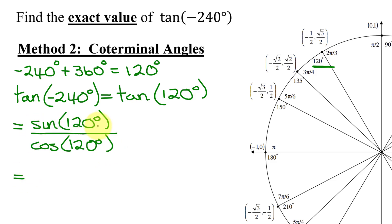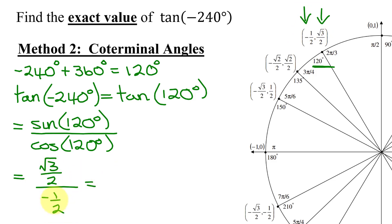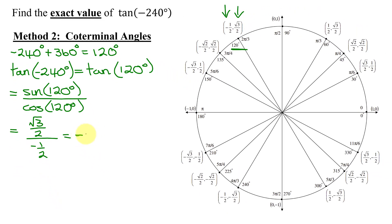The sine of 120 degrees is the y-coordinate of this point, so it's the square root of 3 divided by 2, divided by the cosine of 120 degrees, which is the x-coordinate of this point — negative one half. A positive divided by a negative is a negative. Take the fraction in the numerator, leave it alone: square root of 3 over 2, multiply by the reciprocal 2 over 1. The 2's reduce, giving negative the square root of 3 times 1 over 1, which is just negative the square root of 3.